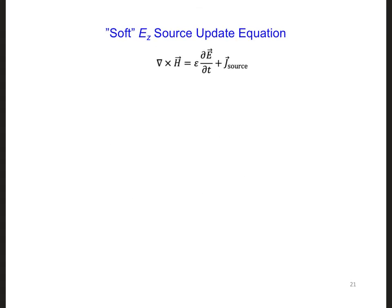After simplifying Ampere's law to 1D and applying central differencing as before, centered at N plus 0.5 and at I, we get: HY at N plus 0.5, I plus 0.5, minus HY at N plus 0.5, I minus 0.5, all over delta X.